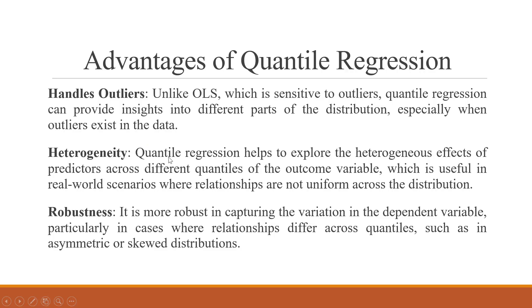Heterogeneity: quantile regression helps to explore the heterogeneous effects of predictors across different quantiles of the outcome variable, which is useful in real world scenarios where relationships are not uniform across the distribution. Robustness: it is more robust in capturing variation in the dependent variable, particularly in cases where relationships differ across quantiles, such as in asymmetric or skewed distributions.